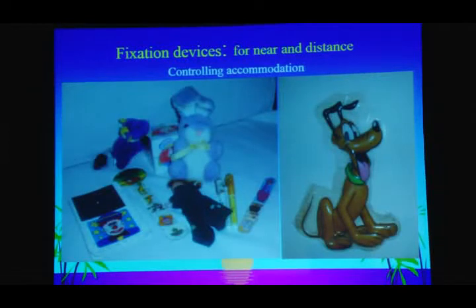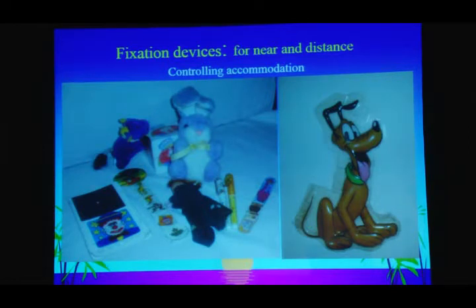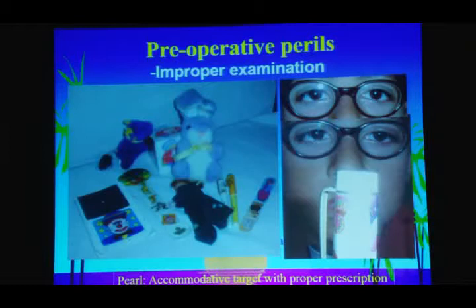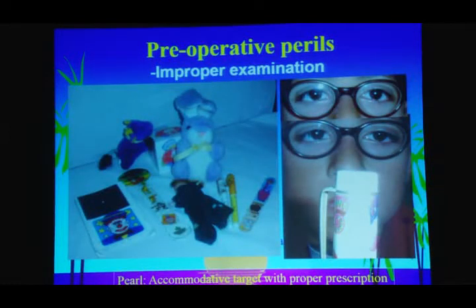Don't use just torchlight — it may appear fancy, but we need accommodative targets for children so that their accommodation is fully elicited. As you see here, there can be a straight eye, but the moment he looks at an attractive target, the eyes turn in.